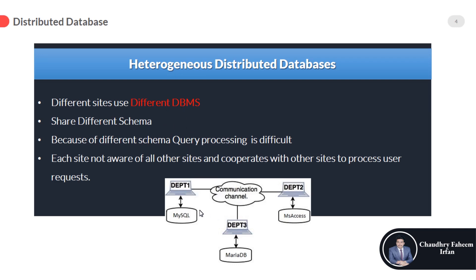For example, department 1 uses MySQL, department 3 uses MariaDB, and department 2 uses MS Access — all departments use different DBMS. Because different DBMS are used, each site will have a different schema.